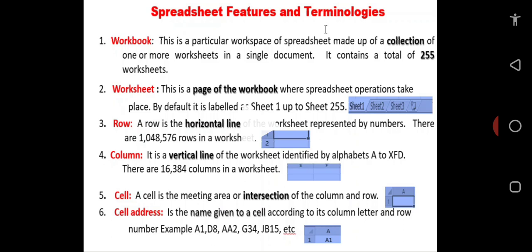Now we go to the fourth one, the column. The column is a vertical line of the worksheet identified by English alphabet A and runs to a combination of alphabet X, F, and D. There are a total of 16,384 columns in a worksheet.